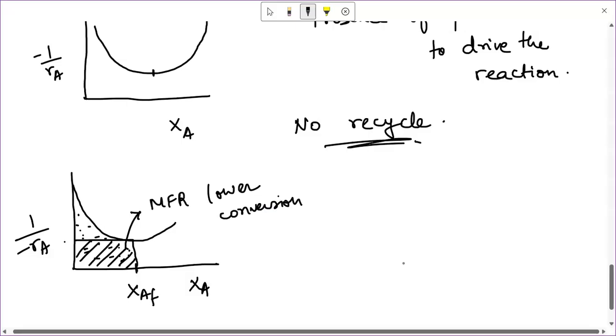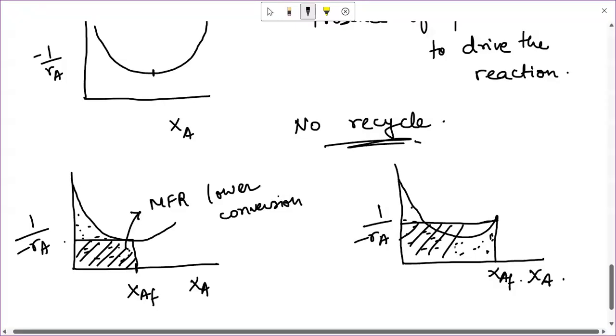Let's now take another case. So I have conversion and I have the rate curve. I have this kind of rate curve here. I want a conversion till here, xAf. In this case, if you put the plug flow reactor or if you put a mixed flow reactor, you are practically getting visually almost the same volume. So for intermediate conversions, the plug flow reactor or the mixed flow reactor may be equally good. This will be a matter of choice.